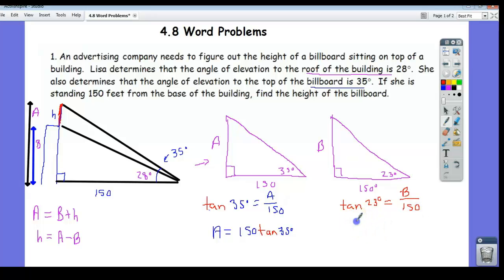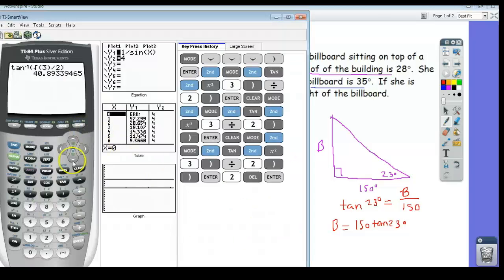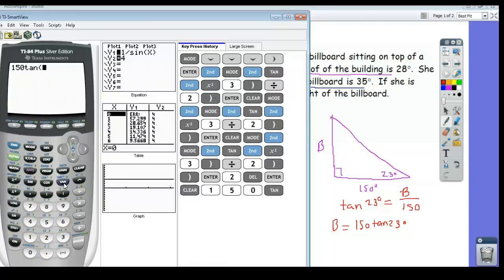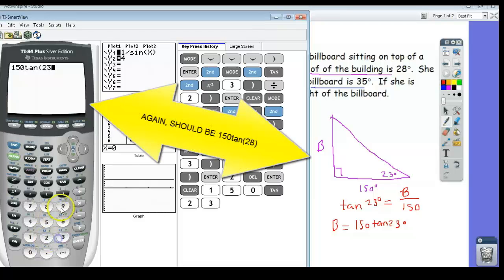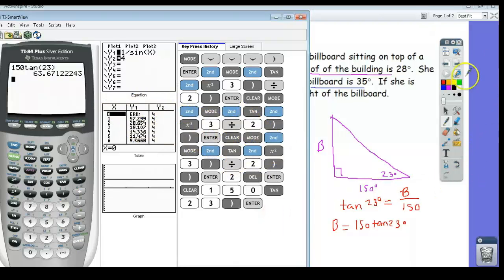Tangent of 23 is b over 150. Which means that's 150 times tangent of 23 is equal to b. And so now we just have to put these in our calculators. So b is 63.67 feet.